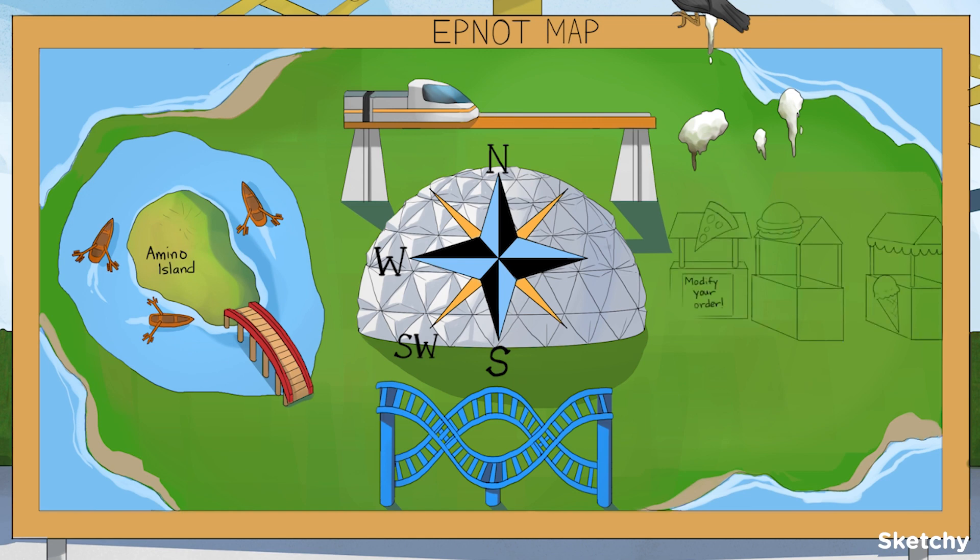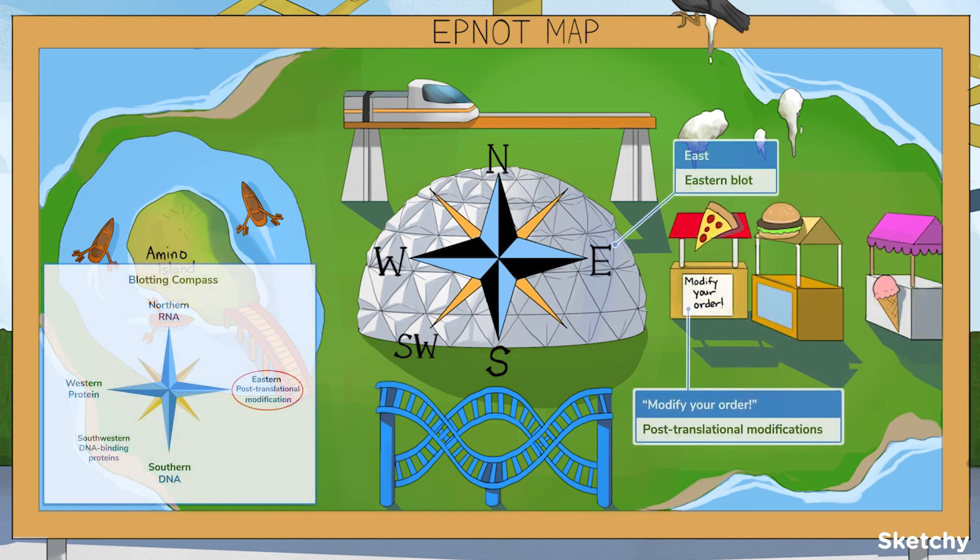Alright, we'll wrap up this section by going over the Eastern blot. It looks for post-translational modifications, specifically lipids, phosphates, and/or sugar groups that get tacked onto proteins. And out east is Epnaut's food court, the place to customize meals and whatnot.